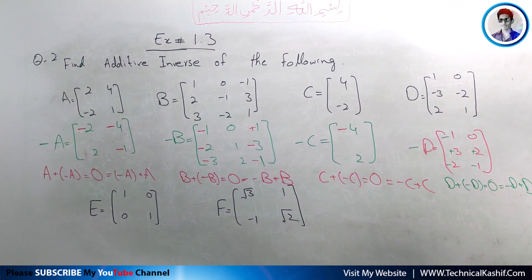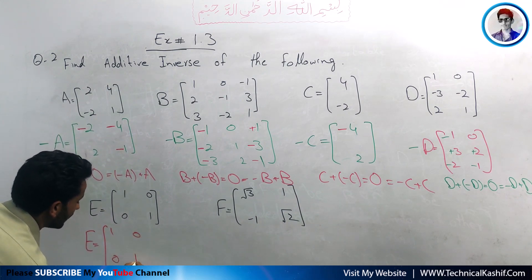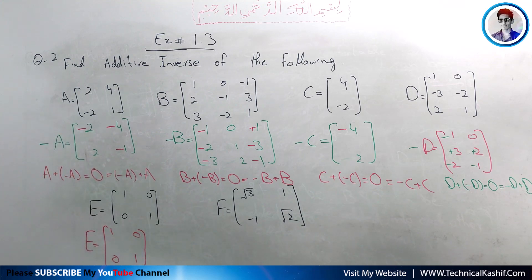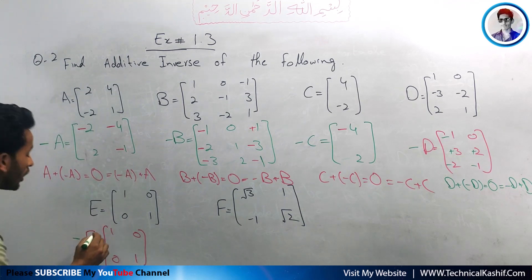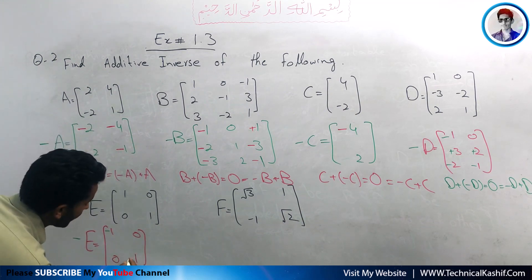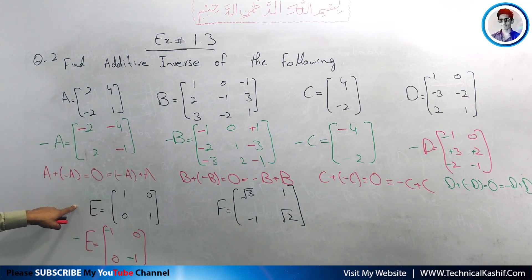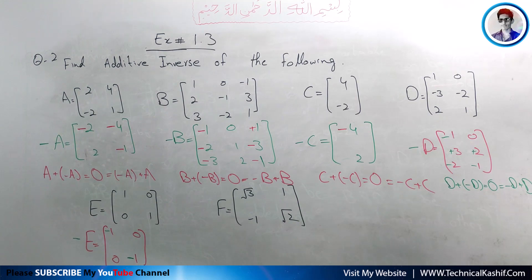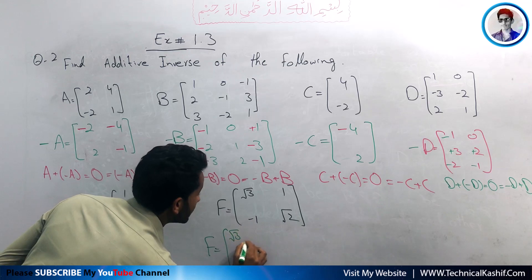For matrix E, which equals: 1, 0, 0, 1 — for its additive inverse we use minus E and change the sign of all elements. 1 becomes minus 1; 0 cannot change its sign and remains 0; and 1 becomes minus 1. So the additive inverse of E is: minus 1, 0, 0, minus 1.